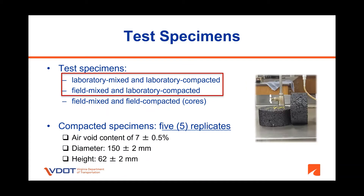The cracking test can be conducted on lab mix lab compacted or field course specimens. Please note that testing field cores are not part of VDOT-BMD requirements. VDOT-BMD spec requires five replicate specimens for this testing, and the specimens shall be compacted to 7 ±0.5% air void content, with a height of 62 ±2 mm and a diameter of 150 ±2 mm.